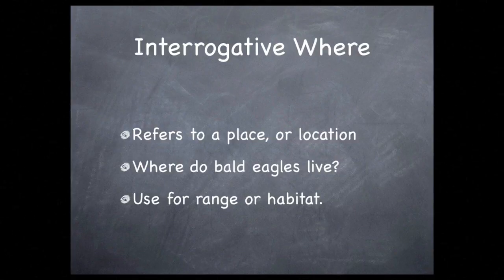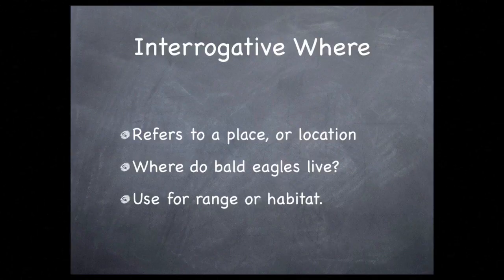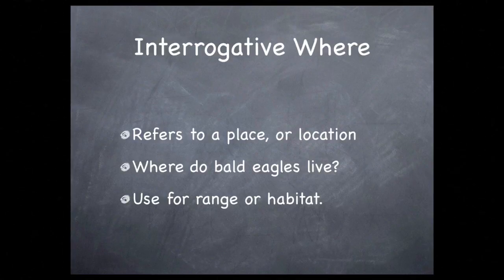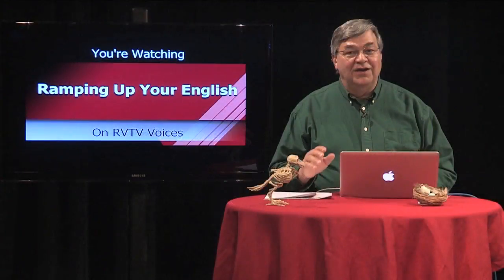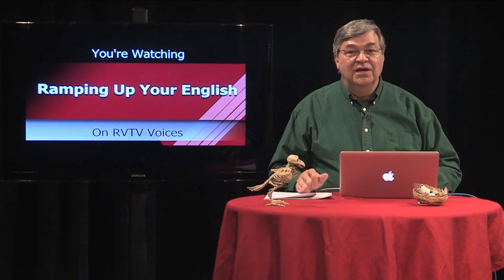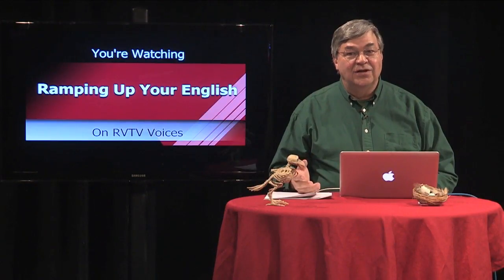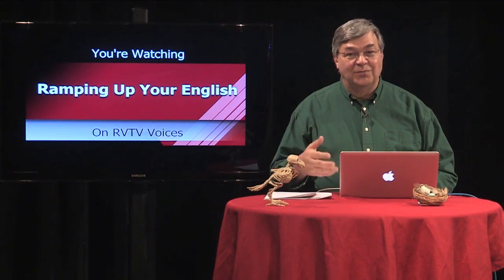The word where always refers to a place. The section in your report on range is perfect for the word where. The simple question — where do bald eagles live — can be answered by location, or range, or locations. Bald eagles live throughout North America. The word where can also inquire for the type of place, or habitat, in which an animal lives. Where do bald eagles live? They live near bodies of water. So where can inquire about an animal's habitat. The interrogative where is always answered by a location or a place, so when your report covers range and habitat, you've answered the question of where the subject of your report lives.